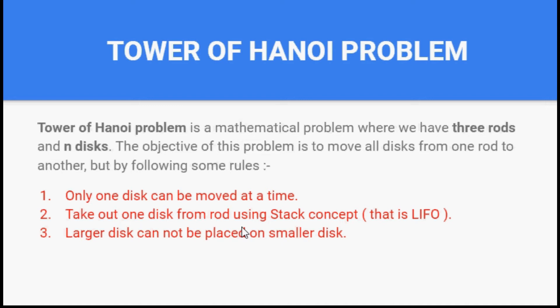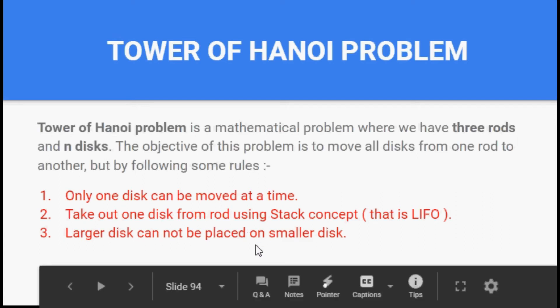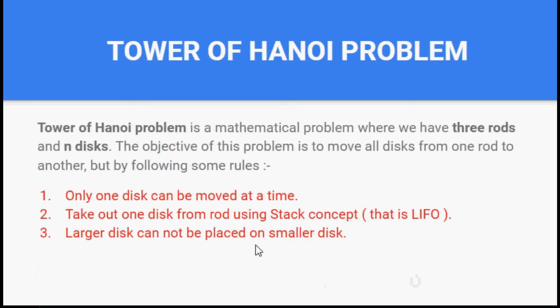The last rule is that a larger disc cannot be placed on a smaller disc. Each and every disc has a different size in the Tower of Hanoi problem, so we need to ensure we are not placing a larger disc on top of a smaller disc.